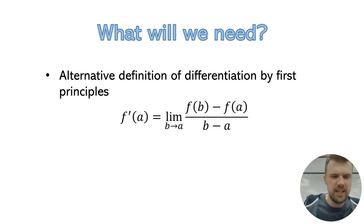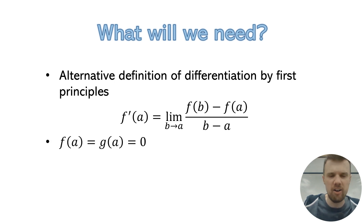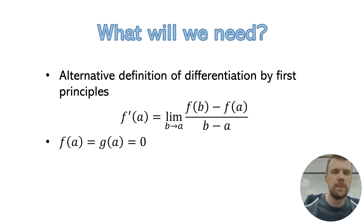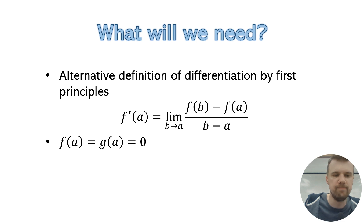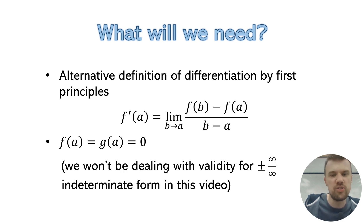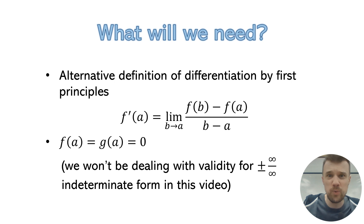The other thing we're going to need is to make a bit of an assumption. We're going to assume that f(a) and g(a) are equal to zero. Now, that is a pretty big assumption and is a bit of an issue, because you might — if you know L'Hôpital's rule well — realize that's fine for one of the indeterminate forms, which is where the original fraction tends to zero over zero. But that does mean we're not dealing with the situation where the top tends towards infinity and the bottom tends towards infinity. Just be aware that's one of the issues with this proof.